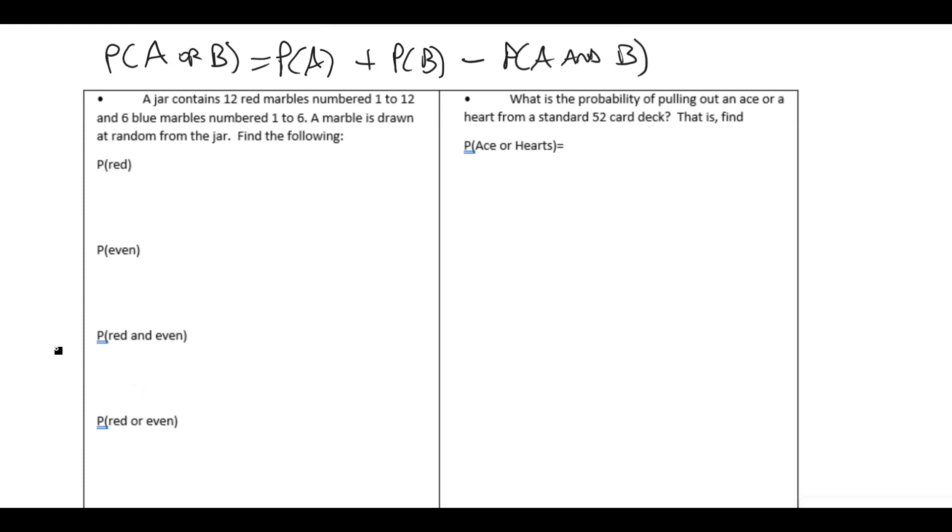First off, the probability of getting red. That would be there are 12 red marbles. Now there are also six in there, so 12 plus 6 is 18 total marbles. And that equals two-thirds.